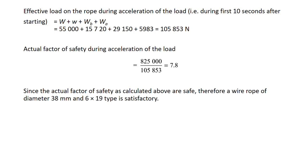The factors of safety obtained are within the permissible limit, so the design is safe. Therefore, a wire rope of diameter 38 mm, 6×19 construction, is satisfactory. In case the actual factor of safety is not within the permissible limit — if it is less than the permissible limit — then we would increase the number of wire ropes to make the design satisfactory.